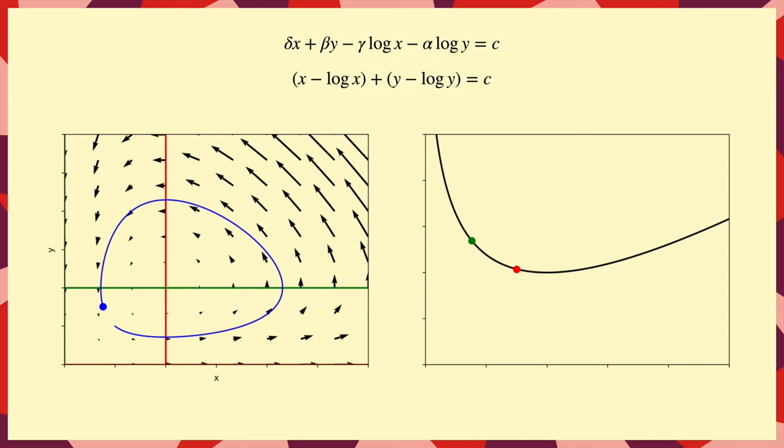And the minimum on the graph is at the fixed point, where the trajectory can't move anywhere, it has to stay where it is.